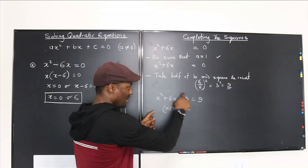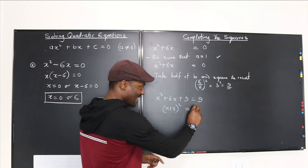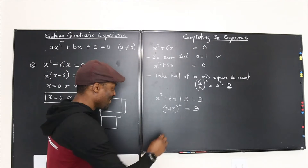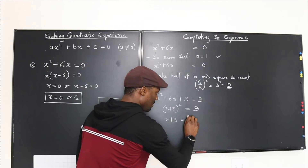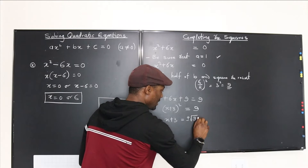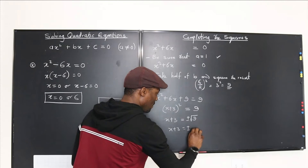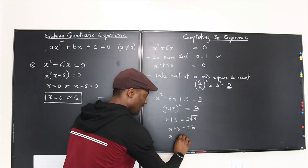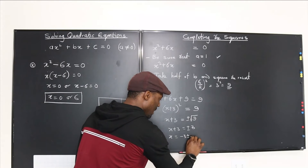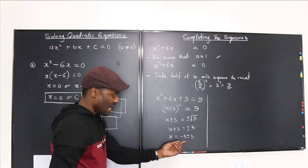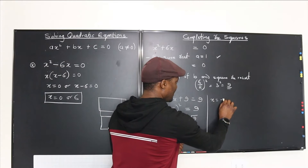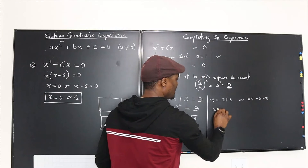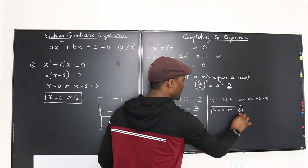Now we've rewritten this as a square, we can take the square root of both sides. So x plus 3 equals plus or minus the square root of 9, giving x plus 3 equals plus or minus 3. Moving the 3 over: x equals negative 3 plus or minus 3. So x equals 0 or x equals negative 6 — those are the two possible answers.